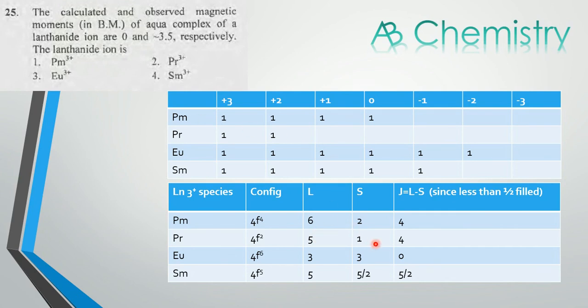For Europium, 4f^6, that is +3+2+1+0-1-2, which will be giving L = 3. Also, there are 6 spins, so 6/2 = 3. So 3-3 which is 0 for J value.